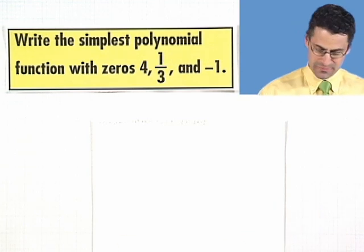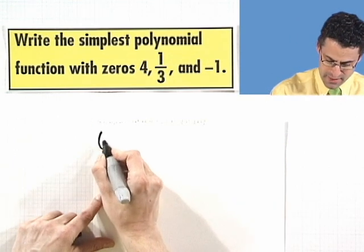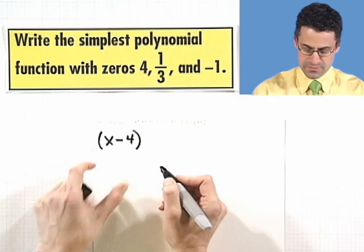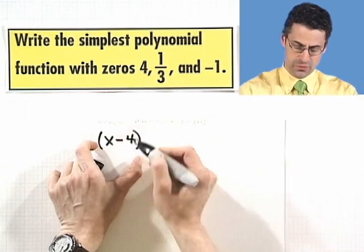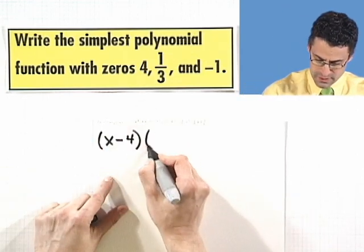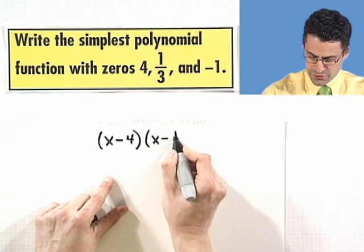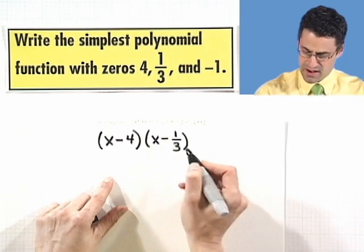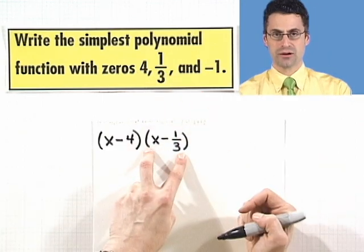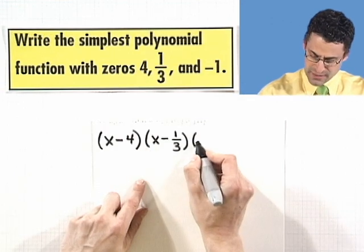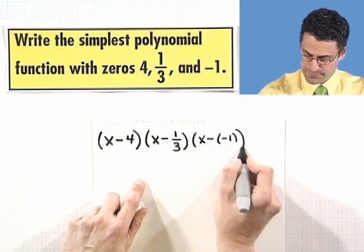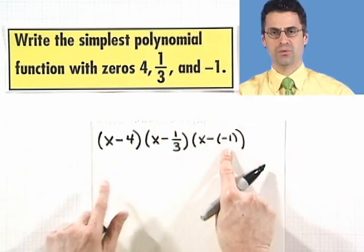So it would be easy to write it down. It would just be (x - 4). That's required because I need to have a zero at 4. (x - 1/3). That has to be there because I have to make sure I have a zero at 1/3. And finally, (x - (-1)) because I need to have a zero at negative 1.